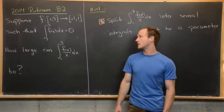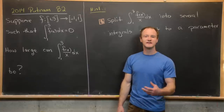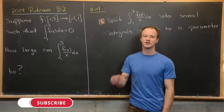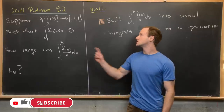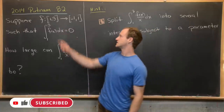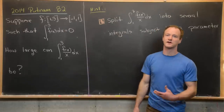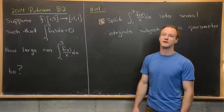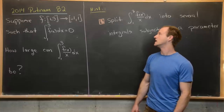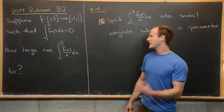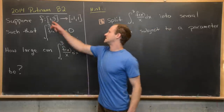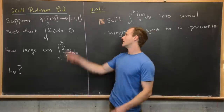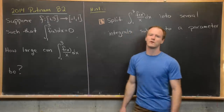Here we're going to look at a solution to a Putnam problem. This is from the 2014 exam, question B2. We want to suppose that we have a function from the closed interval [1,3] into the closed interval [-1,1], meaning the domain of the function is [1,3] and the codomain is [-1,1].